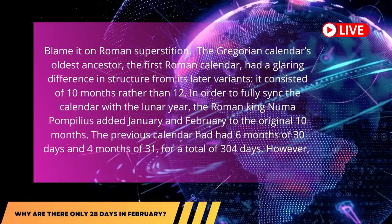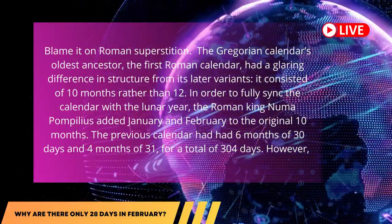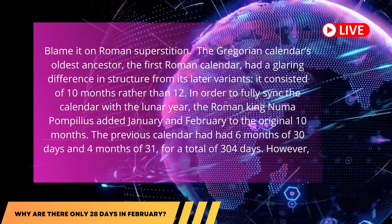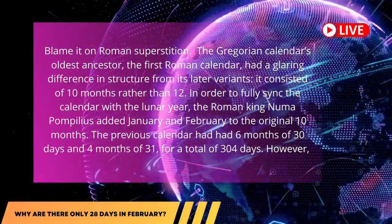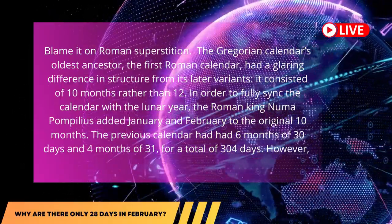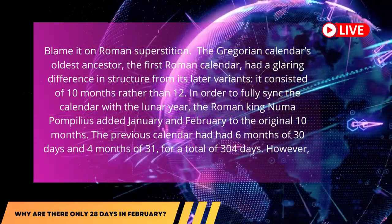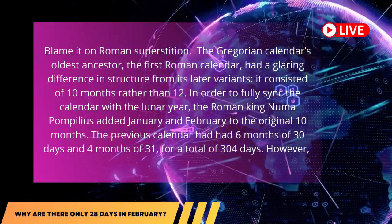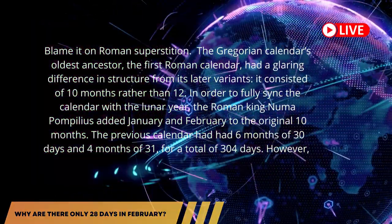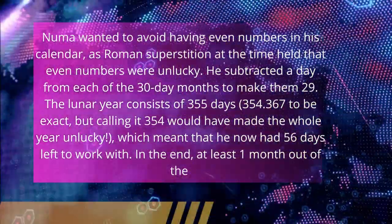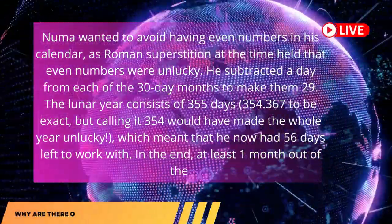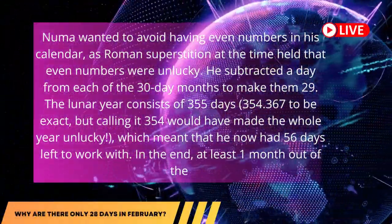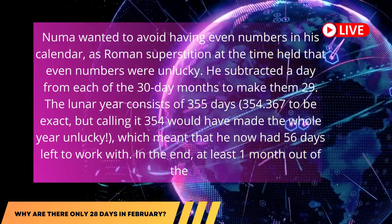In order to fully sync the calendar with the lunar year, the Roman king Numa Pompilius added January and February to the original 10 months. The previous calendar had had 6 months of 30 days and 4 months of 31, for a total of 304 days. However, Numa wanted to avoid having even numbers in his calendar, as Roman superstition at the time held that even numbers were unlucky.